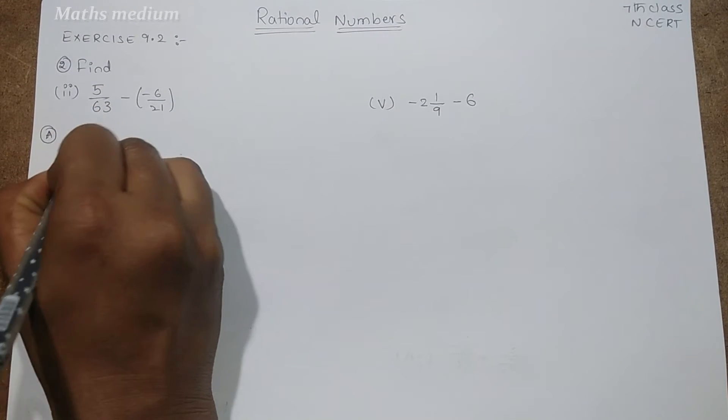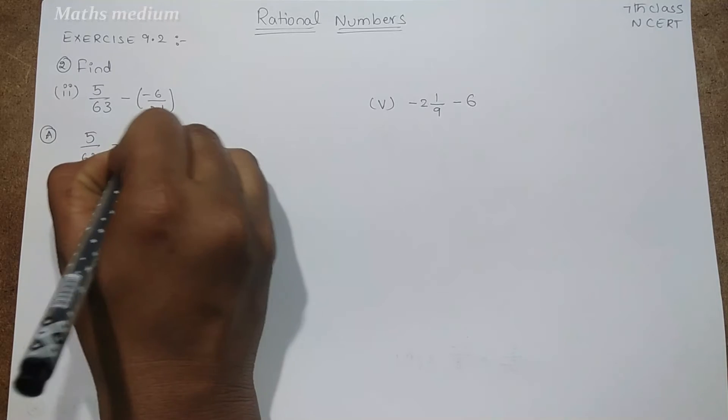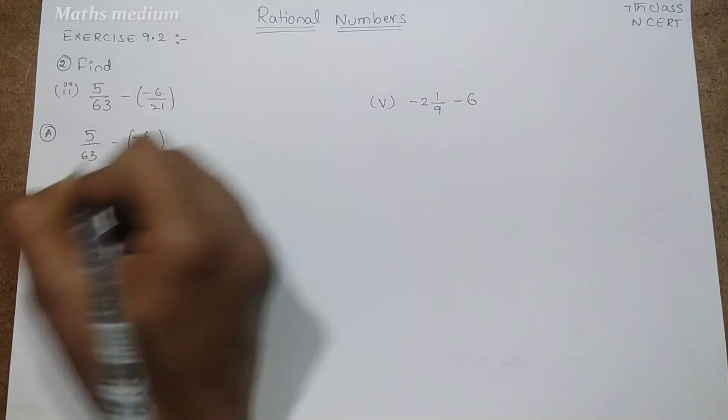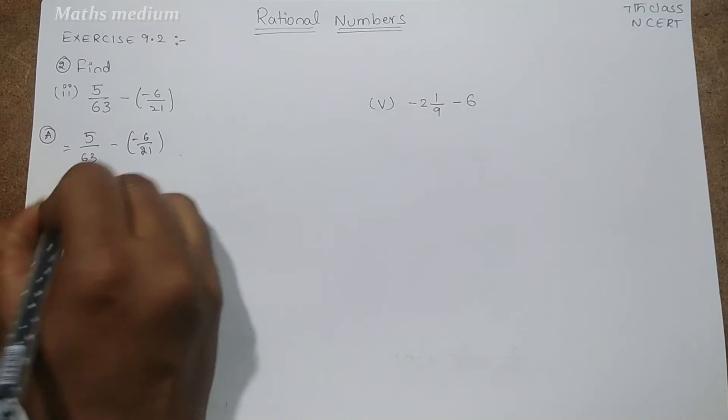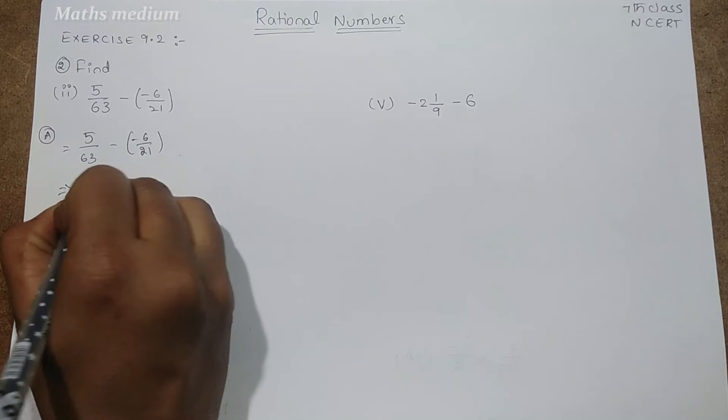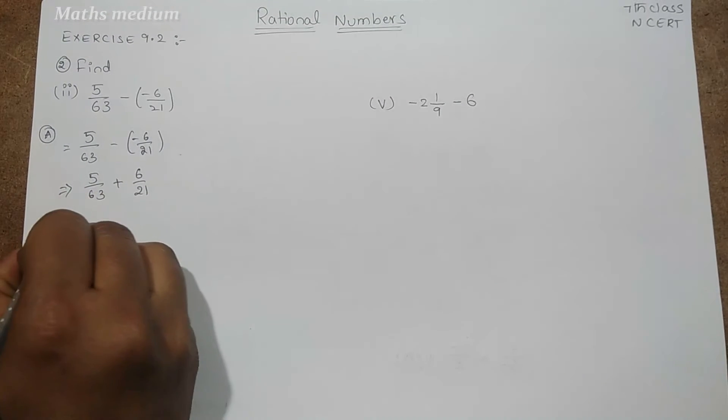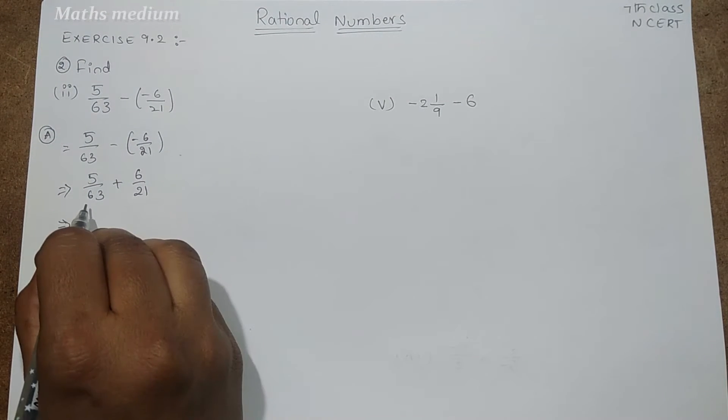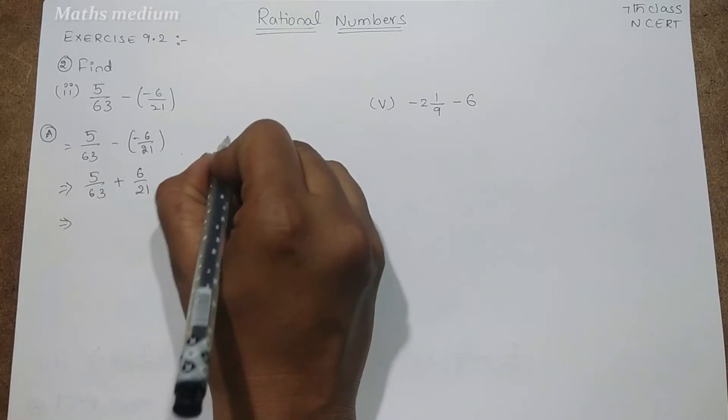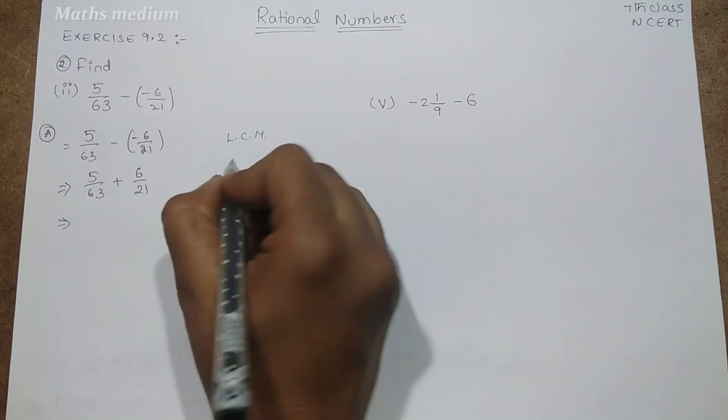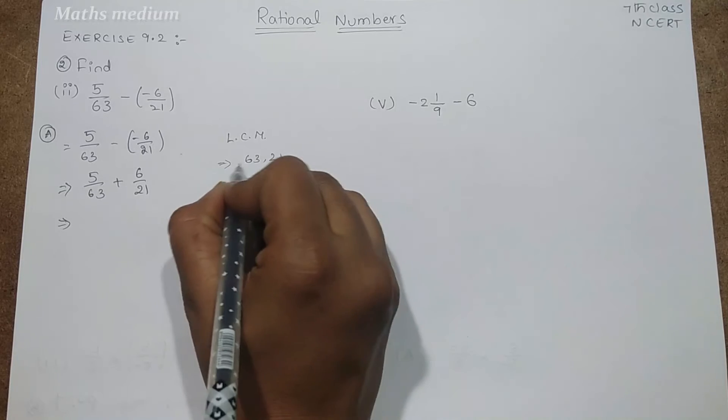This is 5 by 63 minus of minus 6 by 21. So here these two are minus. So 5 by 63 plus 6 by 21. Now these two are not like denominators, so we have to take LCM here. So LCM 63 and 21.